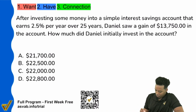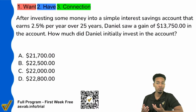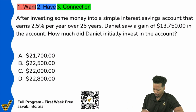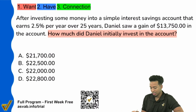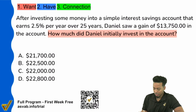So first things first, we're going to read the question to understand the goal first. Don't get distracted by the shiny words or anything you might recognize — just stick to the basics. What am I looking for? Right here: how much did Daniel initially invest in the account? So we know that we are talking about simple interest, because it says simple interest right there.